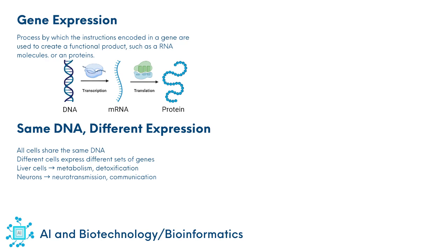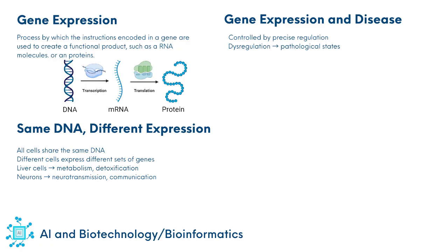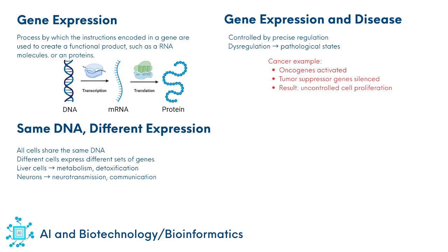This selective expression — some genes on, others off — is what gives each cell type its identity and function. Gene expression is a tightly regulated stepwise mechanism. When this regulation is disturbed, it can lead to pathological states. In cancer, for example, tumor cells activate oncogenes that drive uncontrolled cell proliferation, and silence tumor suppressor genes that restrict cell growth.